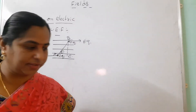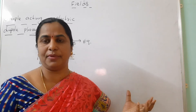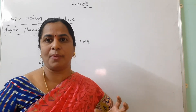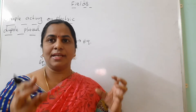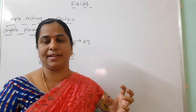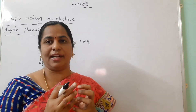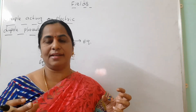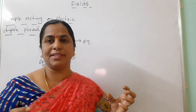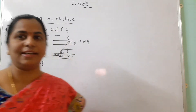The next question covers the electric dipole. What is an electric dipole? We take two opposite charges and maintain some distance between them — that arrangement is called the electric dipole. Generally opposite charges attract each other, but here we maintain a fixed distance between two charges of equal magnitude but opposite sign.